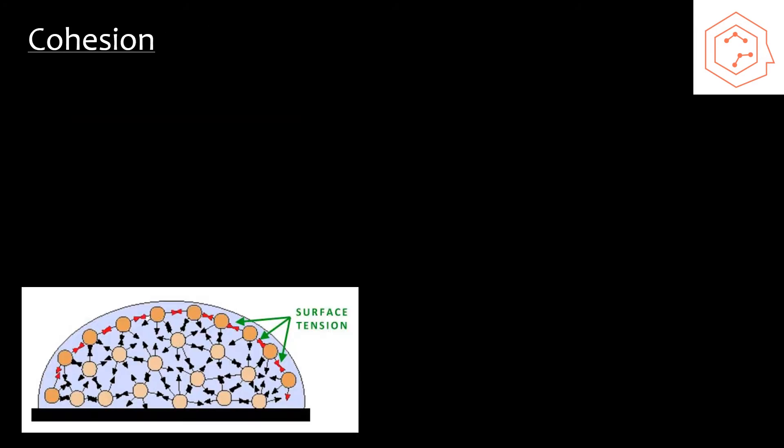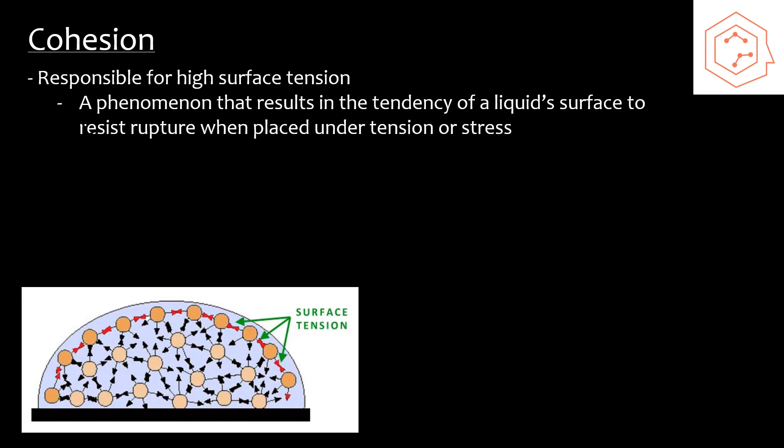Cohesion is all because of the hydrogen bonds. The hydrogen bonds allow for a high surface tension and cause water to form these little bead-like spheres. Cohesive forces are responsible for surface tension. Surface tension is a phenomenon that results in the tendency of a liquid surface to resist rupture when placed under tension or stress.